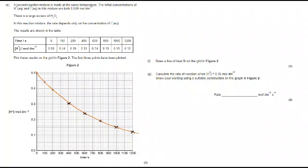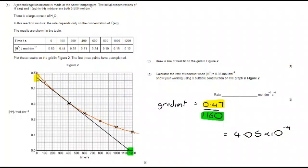For G, calculate the rate of reaction when H plus equals 0.35. Show your working using a suitable construction on the graph in figure two. Whenever you're working out rate of reaction at a particular point, you are going to draw a tangent to that line at that point. So that's what I've done here at 0.35. And I've taken that data. I've used as much of the graph as possible to minimize any calculation errors there. And you can see gradient change in Y over change in X is 0.47 over 1.160, which takes me to 4.05 by 10 to the minus 4, mol dm to the minus 3, s to the minus 1.